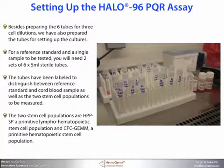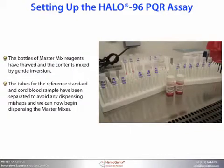The tubes have been labeled to distinguish between the reference standard and the cord blood sample, as well as the two stem cell populations to be measured. The two stem cell populations are HPP-SP, which is a primitive lymphohematopoietic stem cell population, and the CFC-GEMM, which is a primitive hematopoietic stem cell population. The bottles of master mix reagents have been thawed and the contents mixed gently by inversion. The tubes for the reference standard and cord blood sample have been separated to avoid any dispensing mishaps, and we can now begin dispensing the different master mixes.